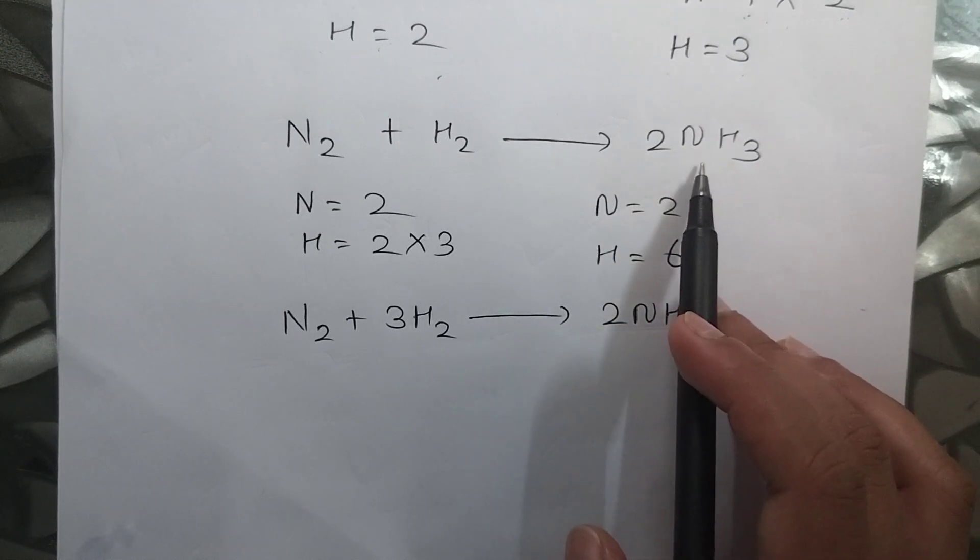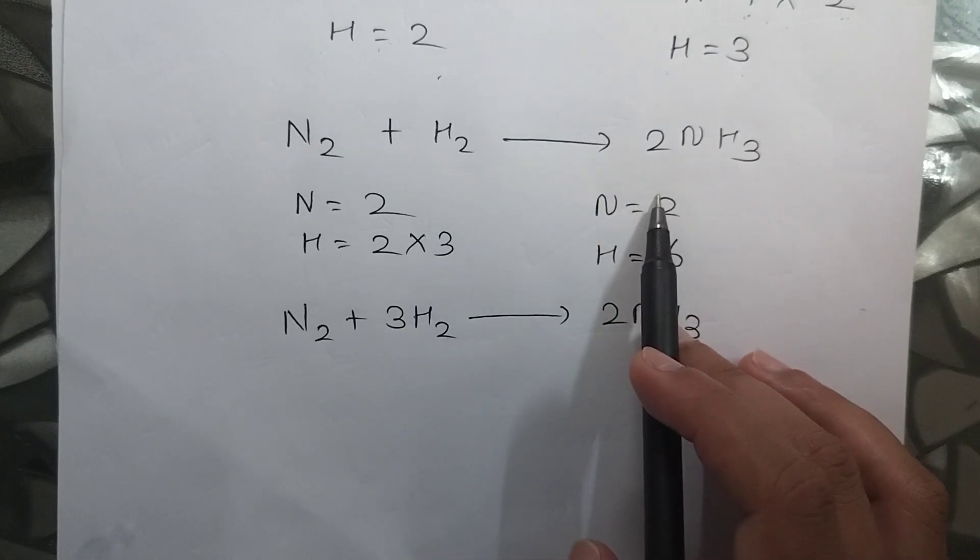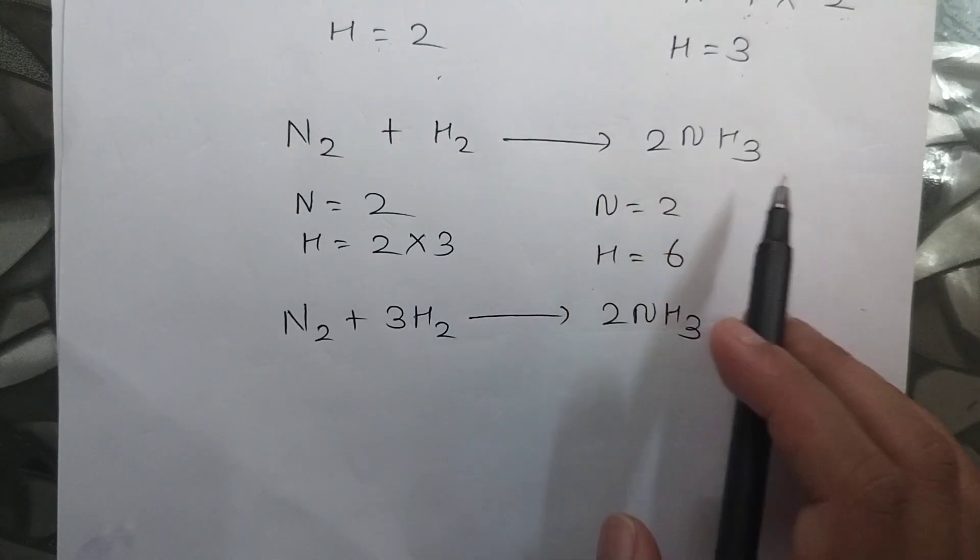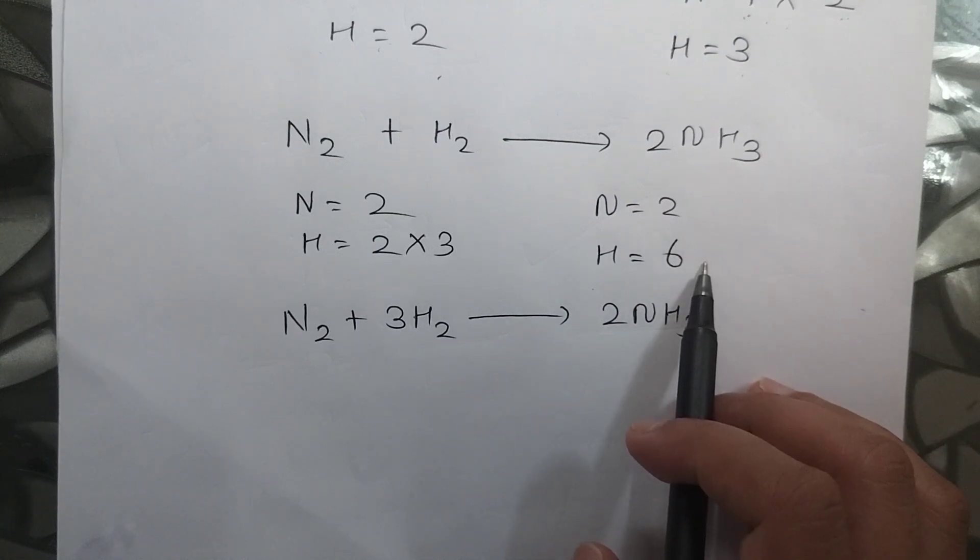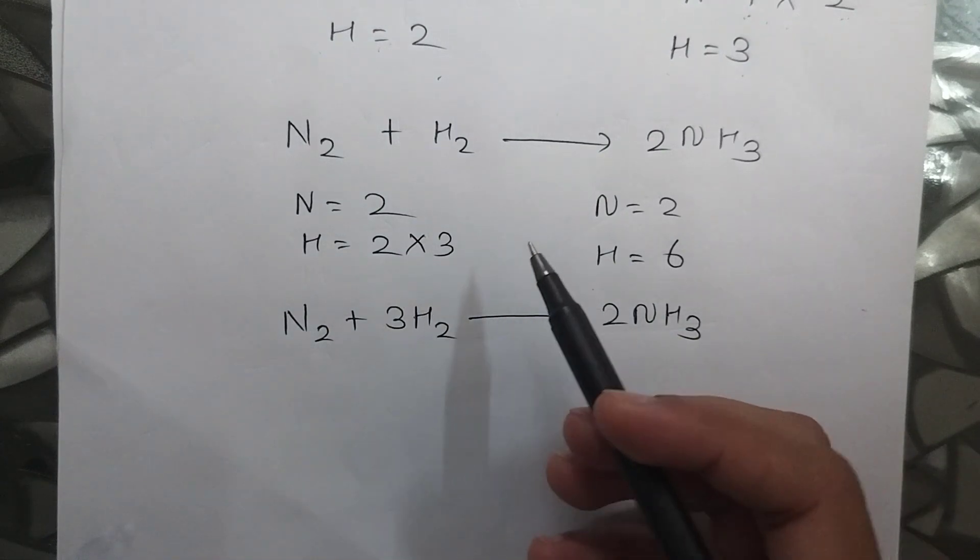Nitrogen why did you write 2? Because here nothing is meant to be 1. 2 into 1 is 2. But for hydrogen 2 into 3 is 6. Now you have to make this also 6. So what do you do to make 2 to 6? Multiply it with 3.